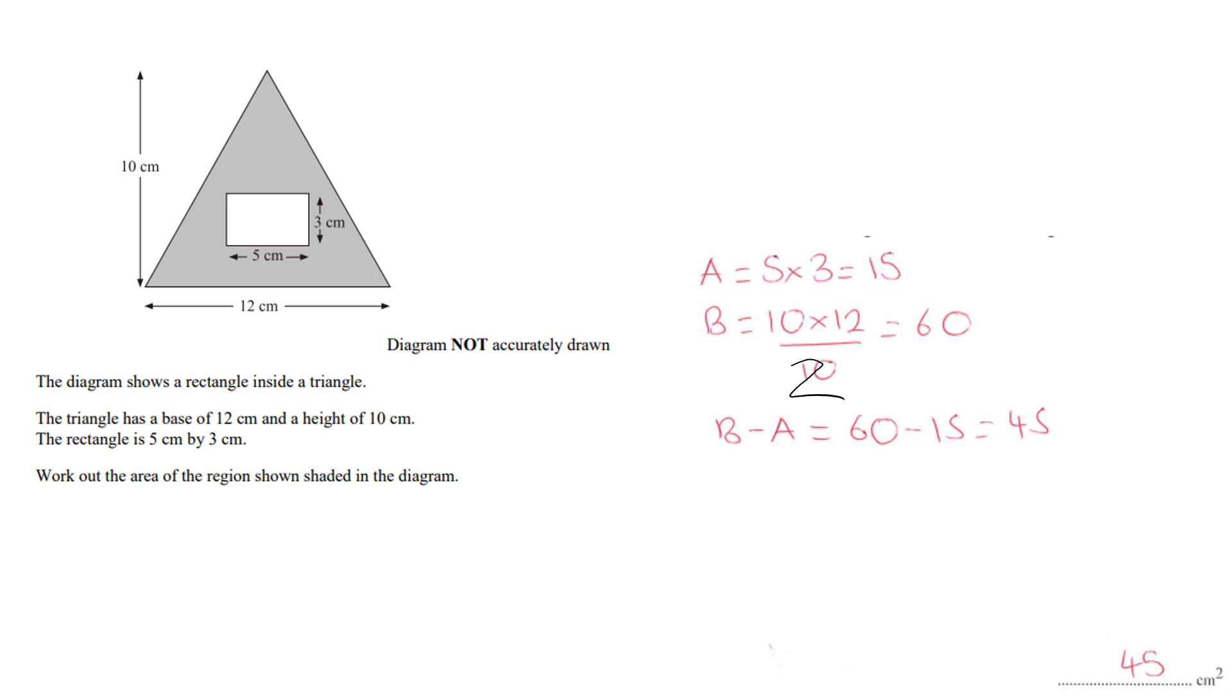Which will give you 60 centimeters squared. And if you then take away the rectangle from the triangle, so we're taking that whole triangle, we're taking the rectangle away, that will give you 45 centimeters squared which is just the area of this gray part of the triangle. Okay and that's it for this video, so thanks very much